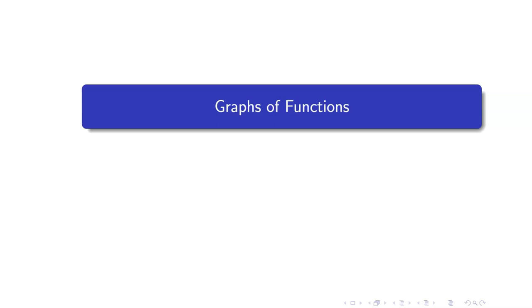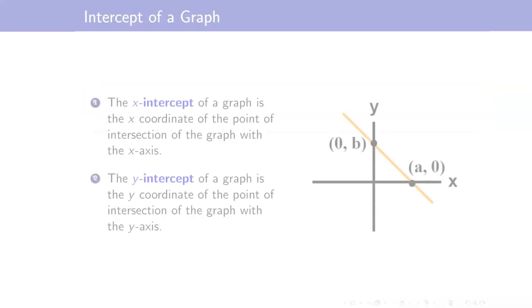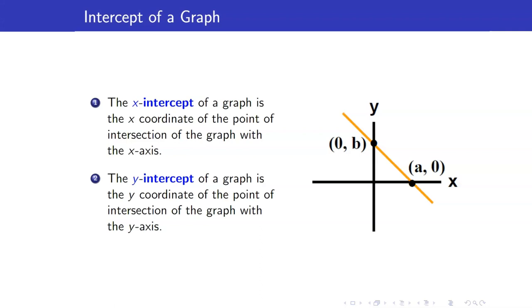In this section, I am going to discuss graphs of functions. Let us first recall the definition of intercept of a graph. The x-intercept of a graph is the x-coordinate of the point of intersection of the graph with the x-axis.